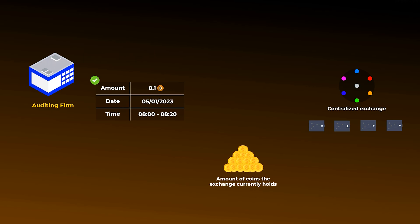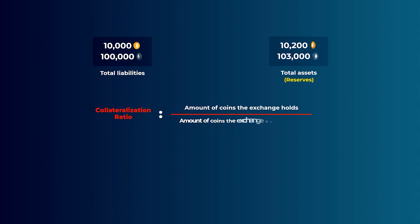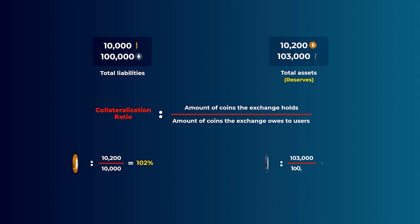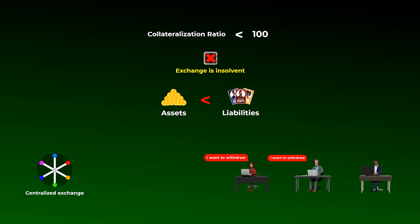This number is then compared with the total liabilities number from the Merkle tree. For example, if the total liabilities are 10,000 Bitcoins and 100,000 Ethereum coins, and the total assets the exchange controls are 10,200 Bitcoins and 103,000 Ethereum coins, the auditing firm will calculate the collateralization ratio for each asset by dividing the amount of coins the exchange currently controls by the liabilities amount. So the exchange in our example will have a collateralization ratio of 102% for Bitcoin and 103% for Ethereum, meaning they have more assets than liabilities. But if the collateralization ratio is less than 100%, then the exchange is insolvent — they have assets less than their liabilities, and if all users want to withdraw at the same time, the exchange couldn't pay, which is a scenario known as a bank run.